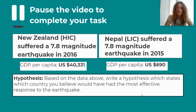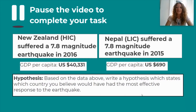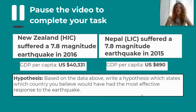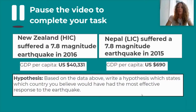The first thing I'm going to ask you to do today is slightly different — it might seem like you've wandered into a science lesson, but you haven't. I want you to write a hypothesis: a statement about which country you believe would have had the most effective response to the earthquake. To help you, the GDP per capita in New Zealand was $40,331 a year, whereas the GDP in Nepal was $690 a year. A hypothesis is literally one sentence that we will either prove or disprove across the rest of this session. Pause the video now and write your hypothesis.